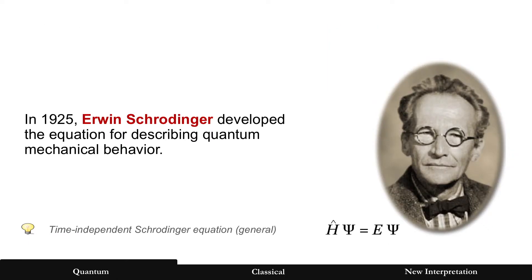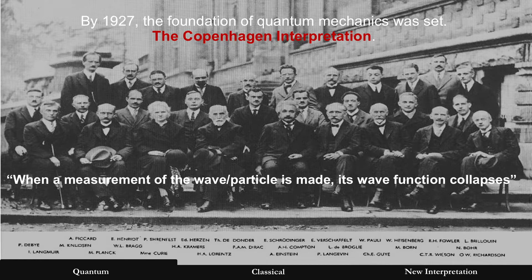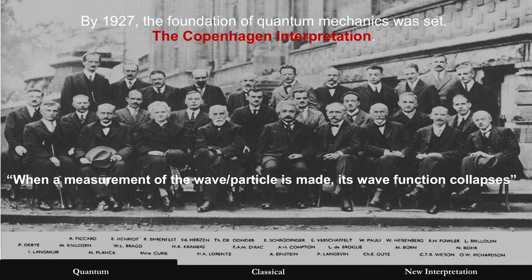And in 1925, Schrodinger developed the equation for describing quantum mechanical behavior. And then a couple years later, the Copenhagen interpretation is really the foundation of quantum mechanics.